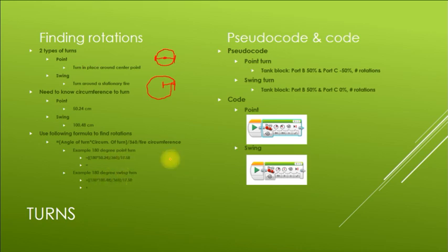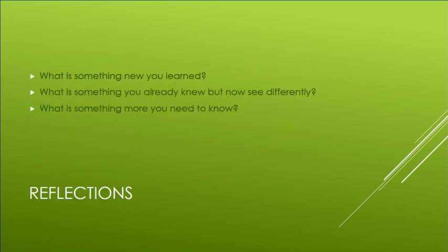Here's what the pseudocode would look like for a point turn. Pseudocode for a swing turn. Here's what the code would look like - notice I'm using tank blocks. If you have any questions, feel free to let me know. This completes our video series, almost.